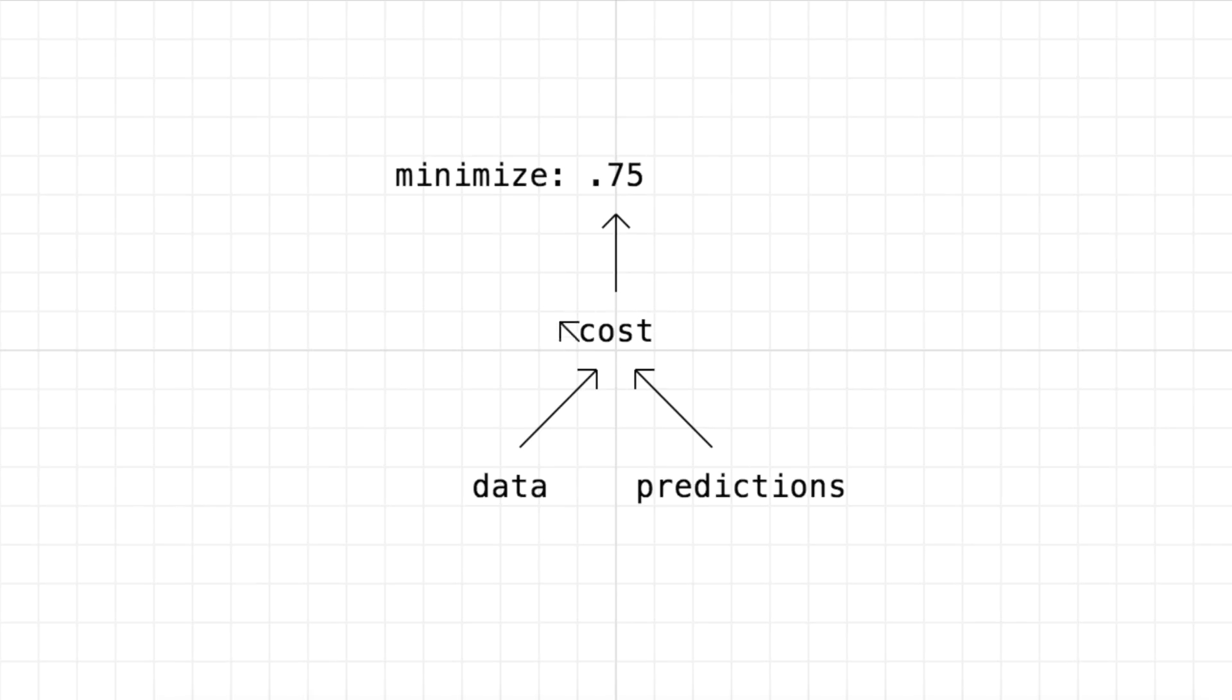Now to change the output of a function we have to change one of its inputs. We can't change the data because the data are just measurements we collected from the real world, but we can change the predictions. The predictions depend not only on the data but also on the parameters or weights of our neural network, which we're able to change.